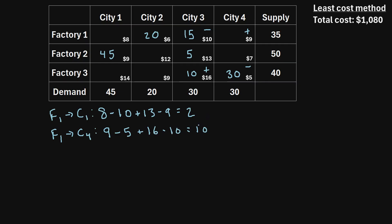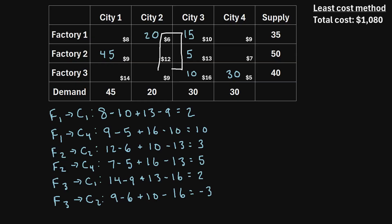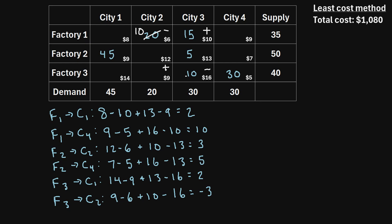After performing all those calculations, we look at the final values again. There is still a negative value, so we have not yet reached the optimal solution. We focus on factory three to city two. Drawing a closed loop touching only allocated cells and assigning plus/minus signs, we identify the minimum value among the minus-sign cells, which is 10. We subtract 10 from the minus-sign cells (20 becomes 10, 10 becomes 0) and add 10 to the plus-sign cells (one becomes 25, another becomes 10).